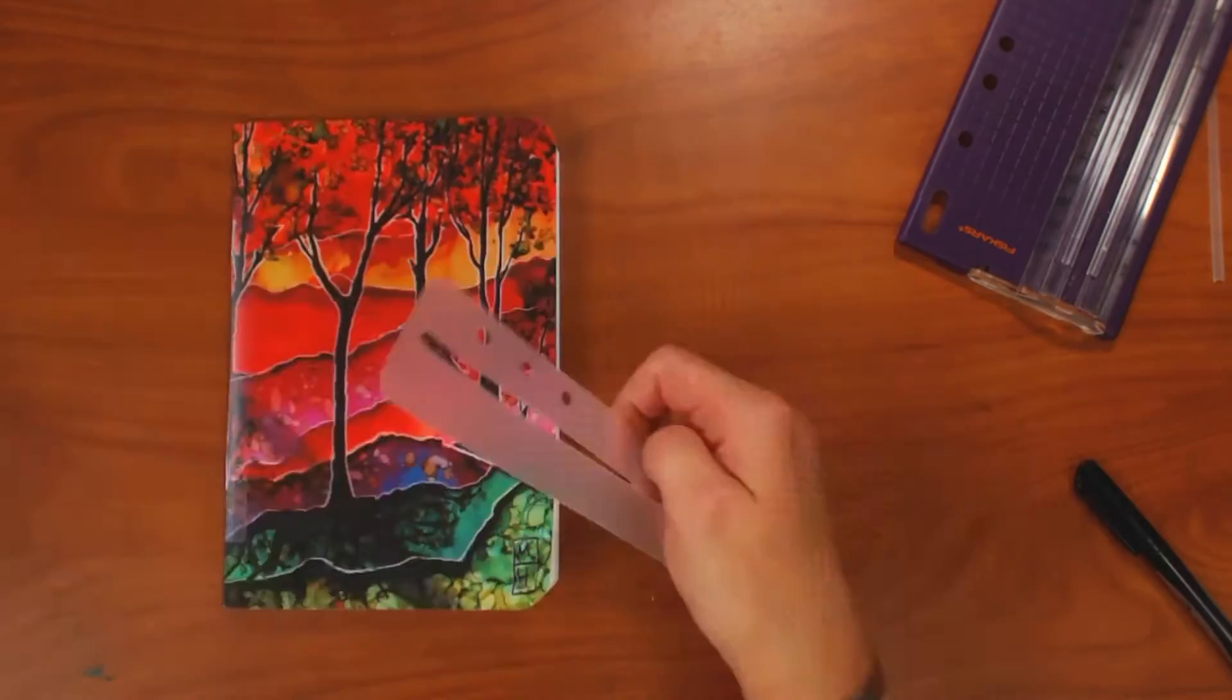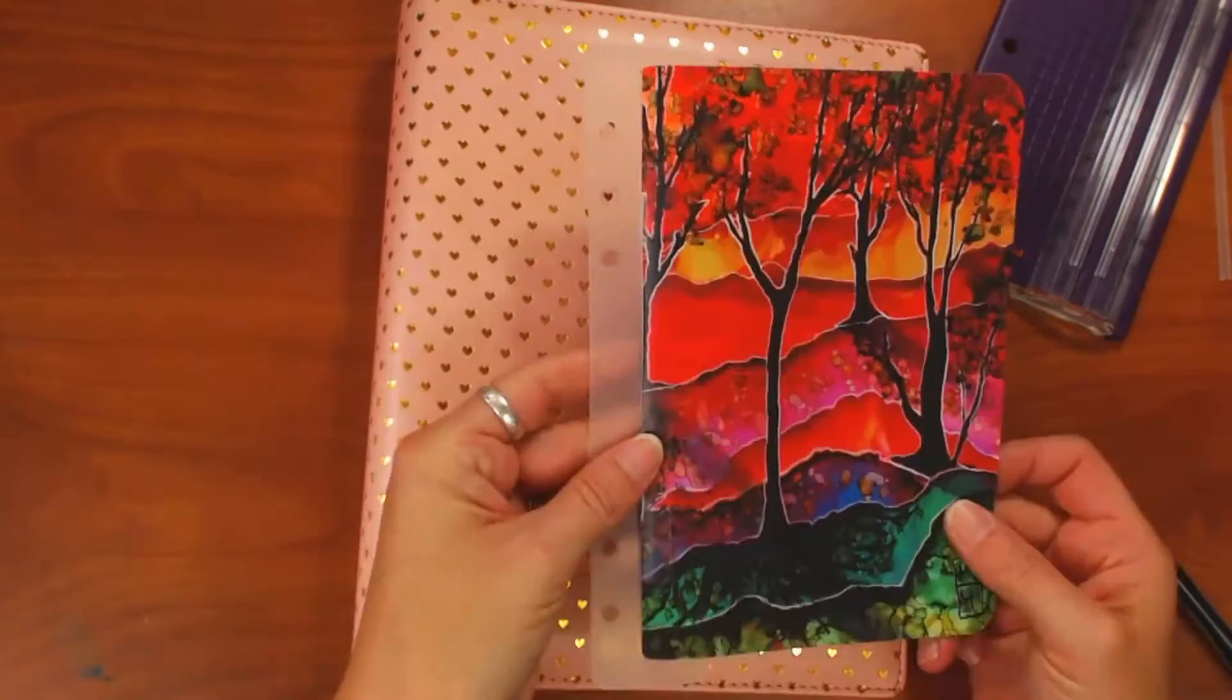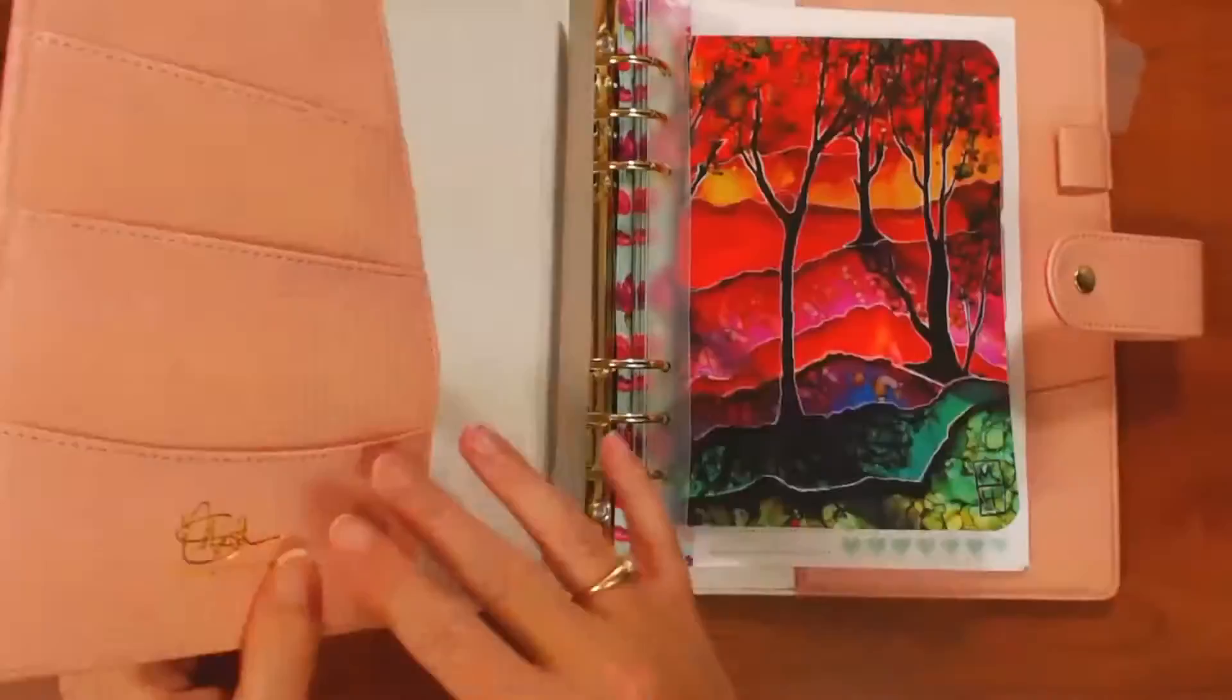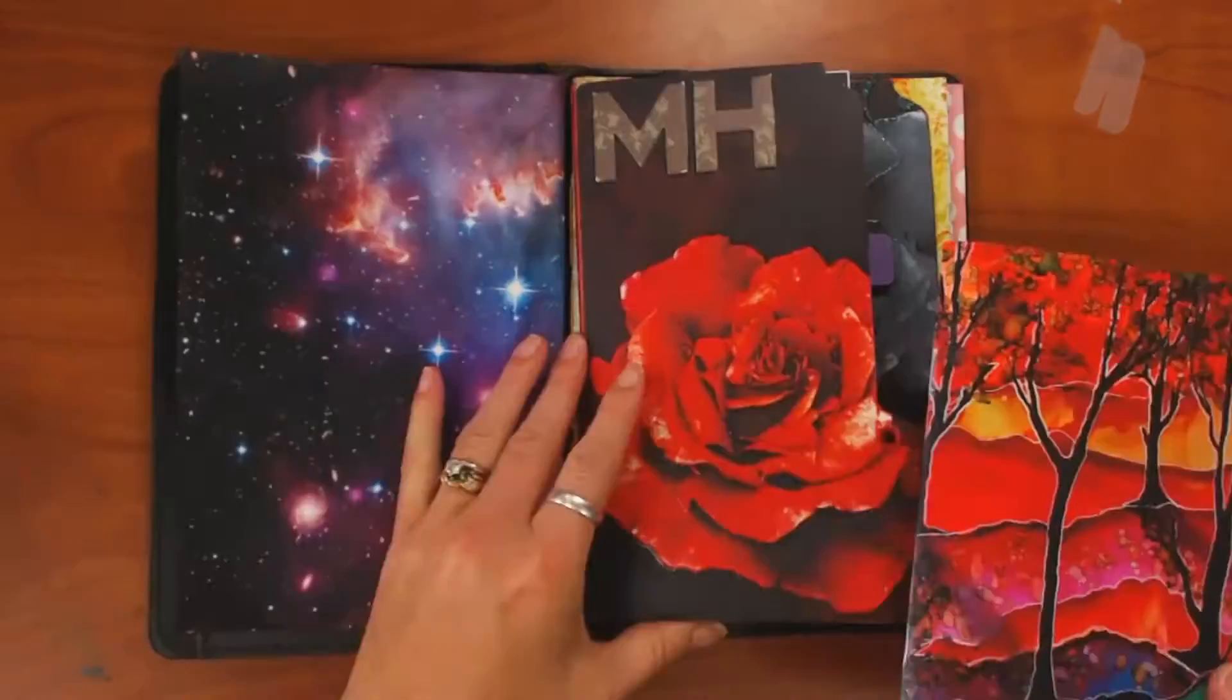And I take my corner rounder, round off those corners again, slide my insert in there into the adapter, put it in the rings, and it just fits perfectly in my six-ring planner. And this one happened to be by Marion Smith, the Peachy Planner, which was a limited edition. And it fits just wonderfully.